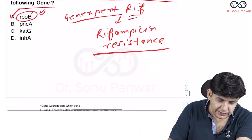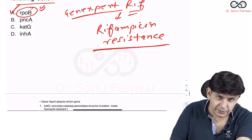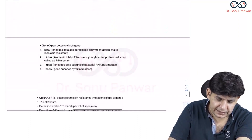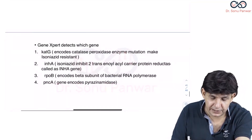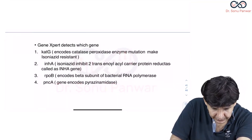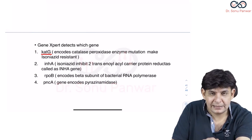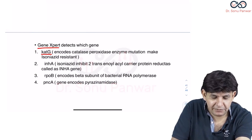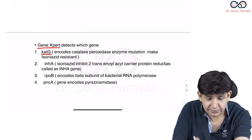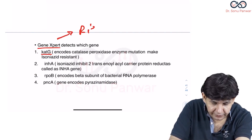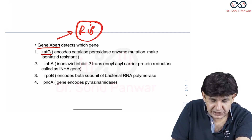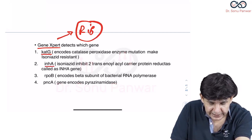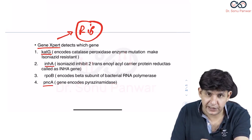There are also other important genes that can be asked. One is the KATG gene, but Gene Expert has nothing to do with that — Gene Expert is only for RIF, remember that. KATG gene can also be asked, INHA can also be asked, and PNCA can also be asked.